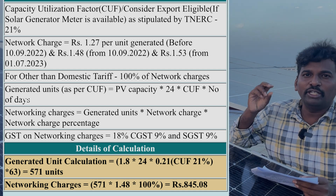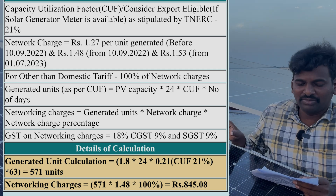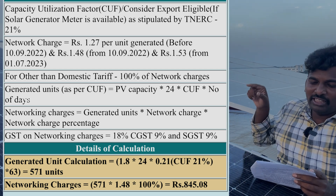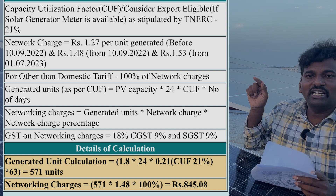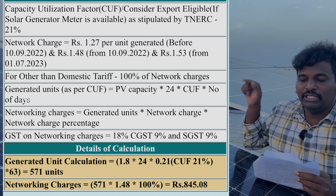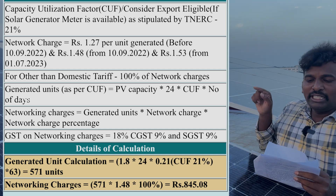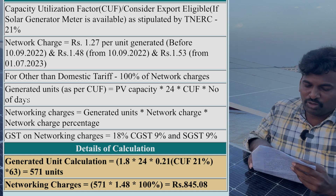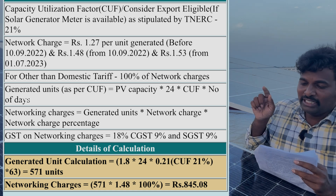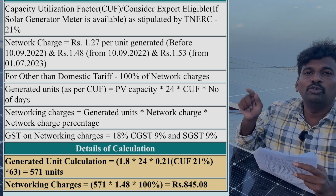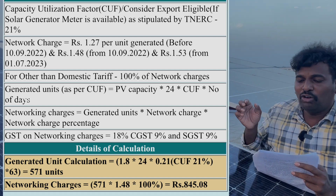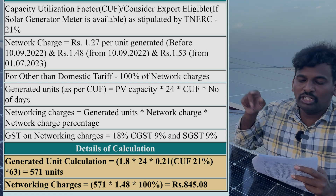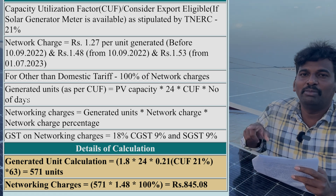The 570 units are fixed. It is fixed in the network charges. This is the formula: Network charges equal to generated units into network charge rate into network charge percentage. Generated units equal to 571 units. We go into network charges at 1.53% of the government rate. The network charge percentage is 100% — it was 20% but 100% is applicable to commercial.